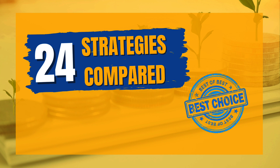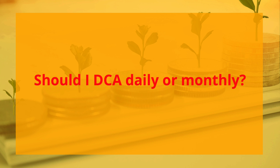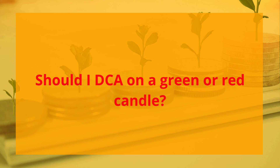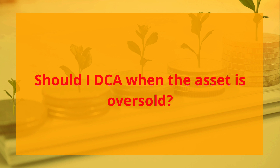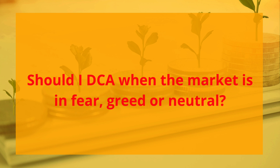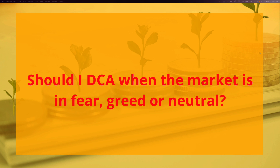Let's start with the most common questions many of you have on DCA. Should you invest every single day or should you do it once a month? Should you chase the green candles or should you wait for big corrections? For those who are tech savvy, should you look for a golden cross or a death cross? A golden cross is when your lower timeframe moving average crosses your higher timeframe moving average, which is considered bullish, and a death cross is the opposite. Should you do it when the asset is oversold following the RSI, or based on market sentiment — fear, greed, or neutral — based on the fear and greed index we see on crypto Twitter?